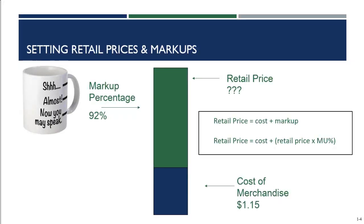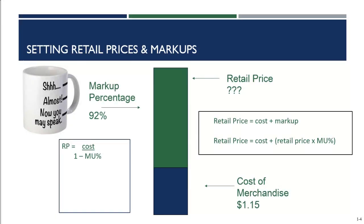Retail price equals the cost plus the markup. Another way to look at it: retail price equals the cost plus the retail price times the markup percentage. Rearranging, this gives us retail price equals cost divided by one minus the markup percentage. We know our cost and we know our markup percentage, so we can calculate the retail price using: cost over one minus markup percentage.